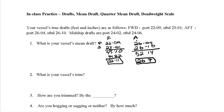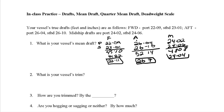Now for the midships draft. The two readings are 24.02 and 24.06. Adding those gives 48.08, so the average is 24'04". That's my midships draft.